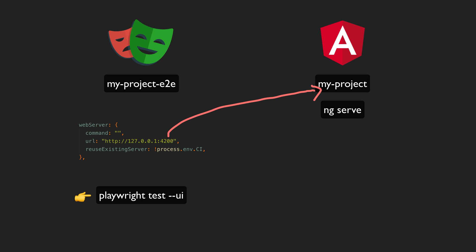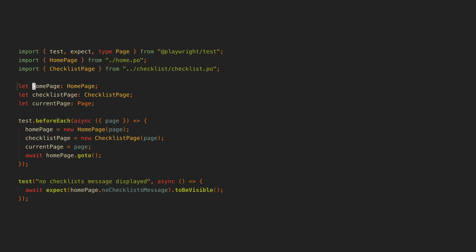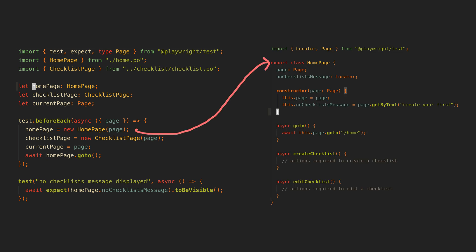I rewrote that test to make it simpler, but keep in mind that the actual test in my project looks more like this. This uses the recommended page object structure where we abstract our locators and some other methods into a home page class to make things more reusable and maintainable. This way if we need to update selectors or change the way adding a checklist works, we can just do it in one place rather than having to update every test.